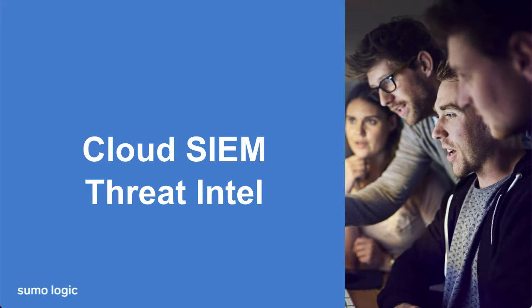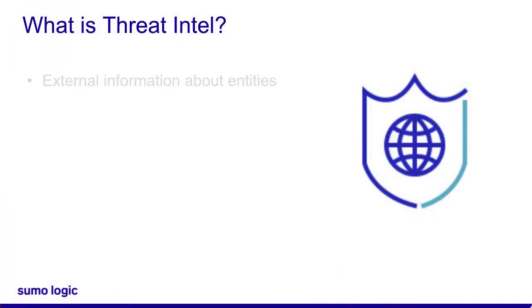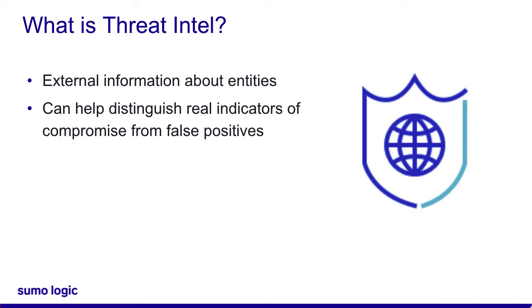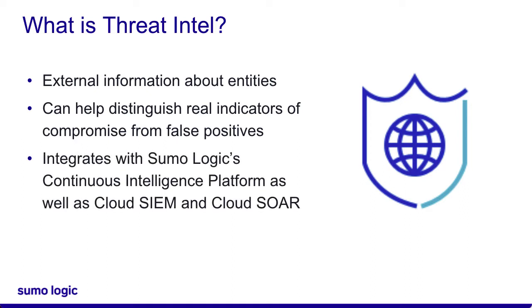Using Threat Intelligence with Sumo Logic Cloud SIEM leverages external sources about indicators of compromise to detect and track potential threats in incoming records. Threat Intelligence, often abbreviated as Threat Intel, is information gathered by external sources about various entities, such as host names, file hashes, IP addresses, and other known indicators of compromise. Threat Intel can help a Security Operations Center, or SOC, leverage a large body of information to surface potential threats. Threat Intel integrates with your existing Sumo Logic deployment, including Cloud SIEM and Cloud SOAR add-ons.